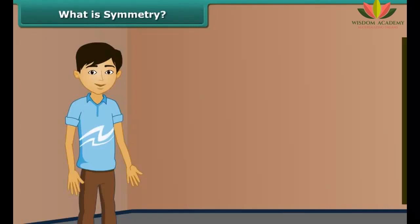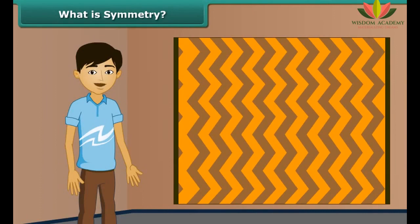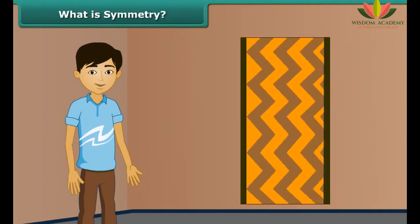Children, look at the rug. When you fold it, the left and right halves match each other. Thus, the rug is said to be symmetrical.